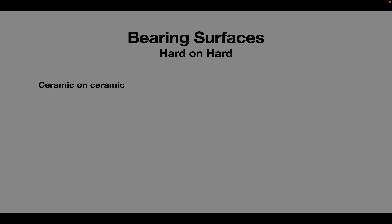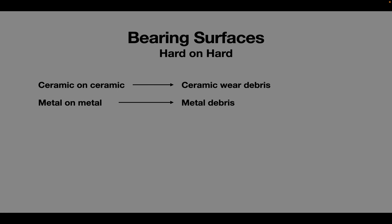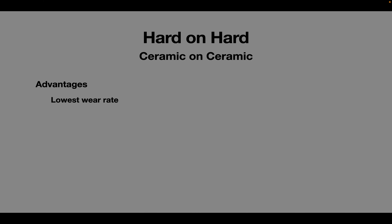Now let's move to the hard-on-hard bearing surface. The hard-on-hard bearing surface currently used in India is ceramic on ceramic, which produces ceramic wear debris. Metal on metal is currently not used in India, and the problem of metal debris has come down significantly. Key advantages of ceramic on ceramic articulation are its low wear rate and biological inertness — they do not elicit inflammation, and the body does not mount any immune response or become metaplastic.